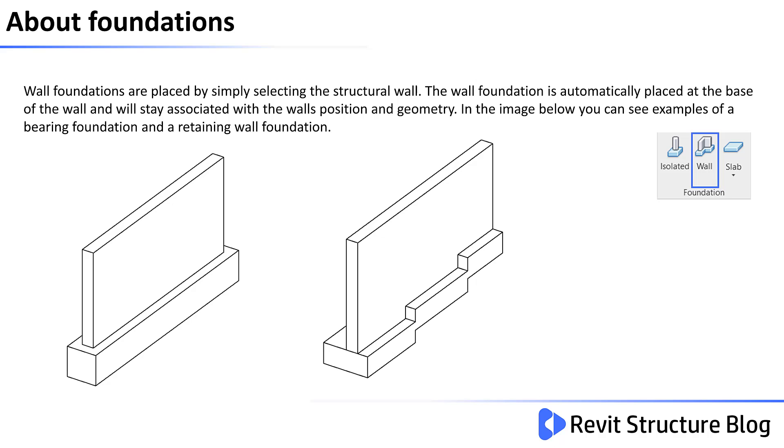In the image below, you can see two examples. On the left hand side, we have a simple bearing foundation which is equally spaced around the wall. And then we have a retaining footing which can have a separate heel and toe length created.